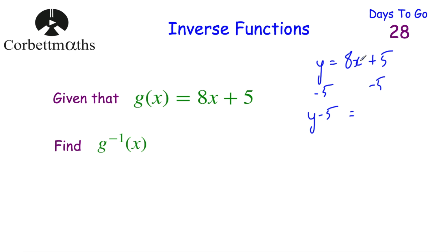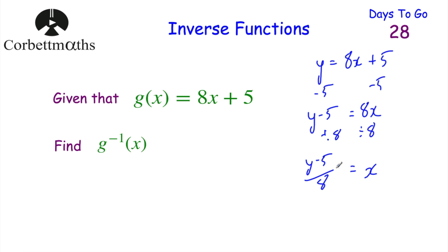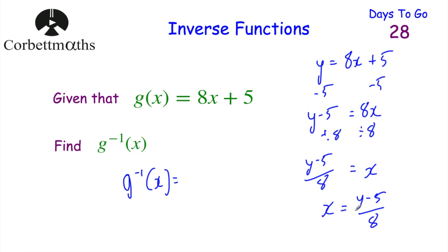We had 8x + 5; taking away the 5 leaves us with 8x. Now we divide both sides by 8: (y − 5)/8 = x. Turning this around: x = (y − 5)/8. So the inverse function g⁻¹(x) = (x − 5)/8. Well done if you got that.